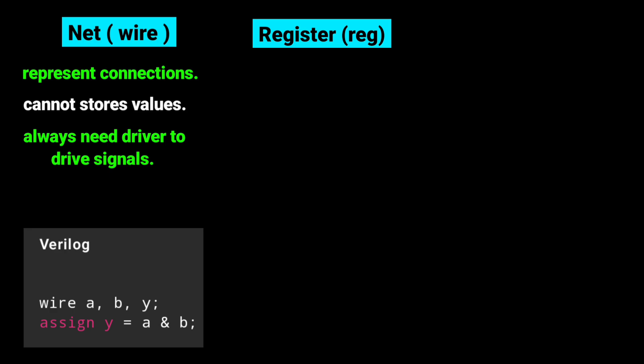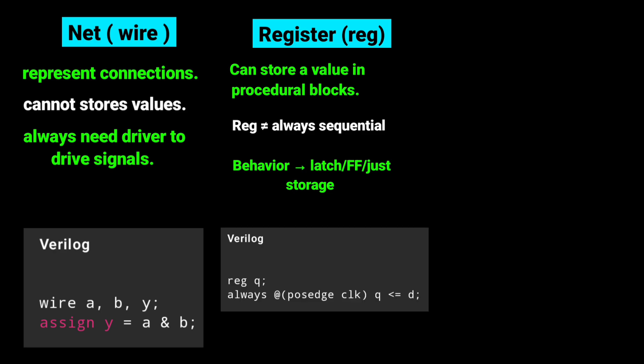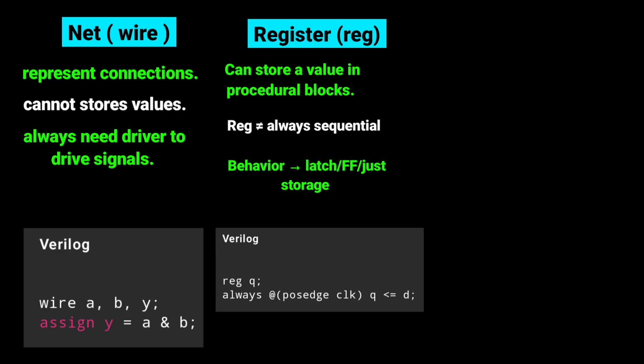Net represents connections between hardware components. They cannot store values. They just reflect whatever is being driven on them. Second one is Registers, which is represented as reg. A reg can store a value until it's updated in a procedural block like always. But remember, reg does not always mean flip-flop. In simulation, it's just storage. In synthesis, behavior decides whether it becomes a latch or a flip-flop.